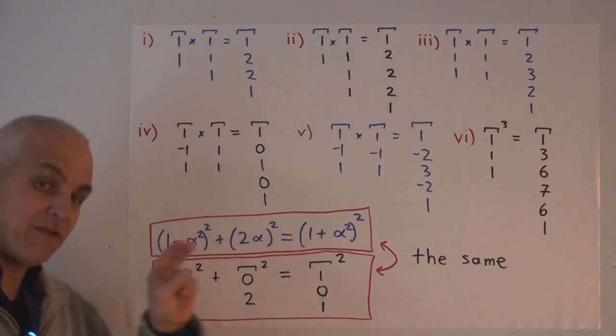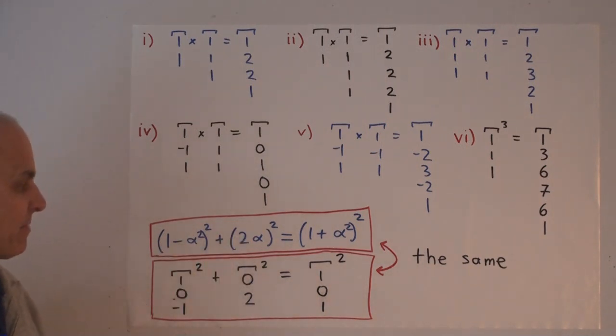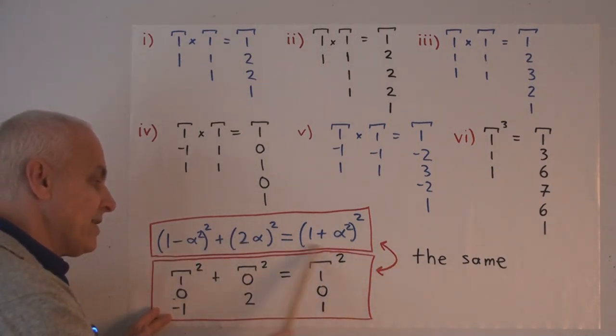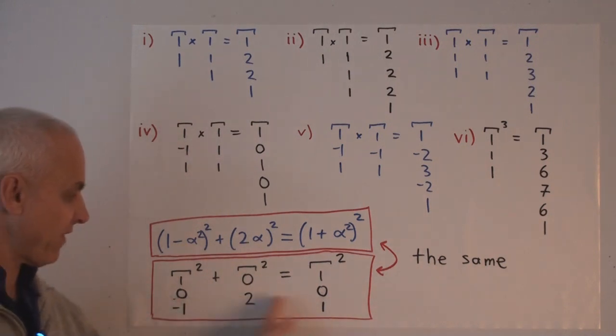So this potentially infinite family of identities is all captured by this one single equation which doesn't have any variables in it.